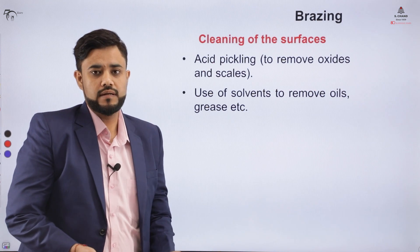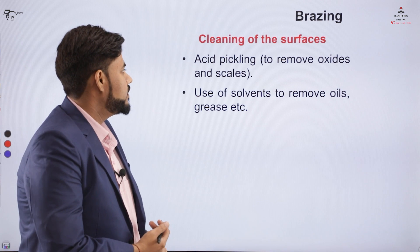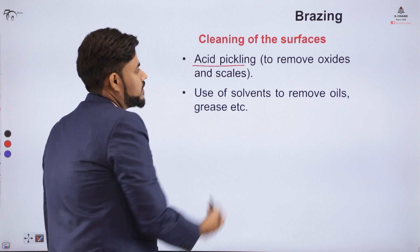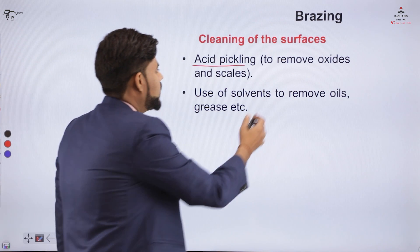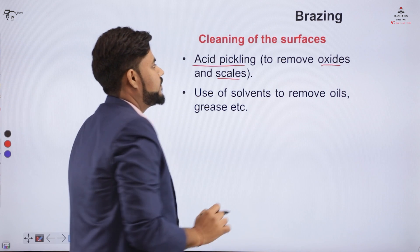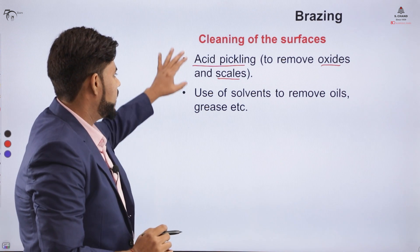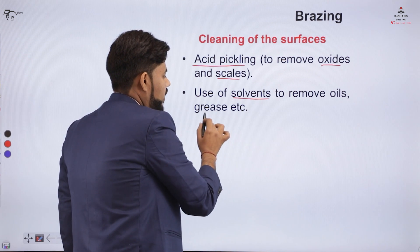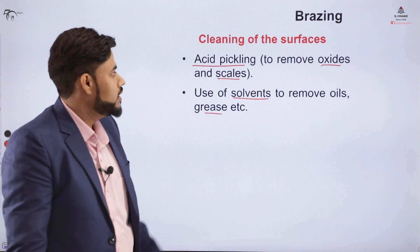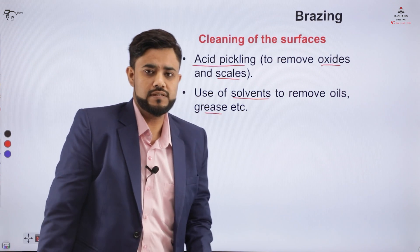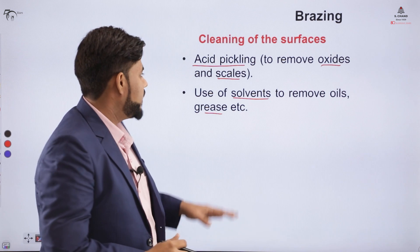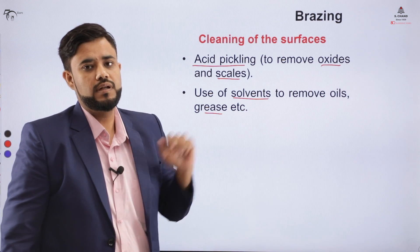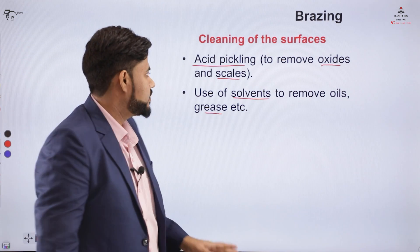For cleaning of the work pieces, we majorly use the acid pickling process, which removes oxides or scales from the surface. We can also use solvents to remove oil or grease from the workpiece surface. The workpiece must be clean before brazing, and we can use either acid pickling or solvents to achieve this.